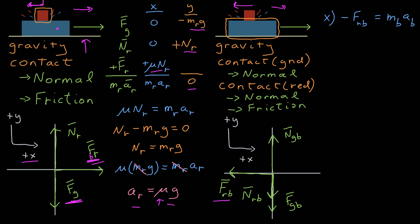So in x, I have the magnitude of the frictional force of red on blue, and it is pointing in the negative x direction. That's equal to the mass of blue times the acceleration of blue, since motion is constrained to move along the x-axis.